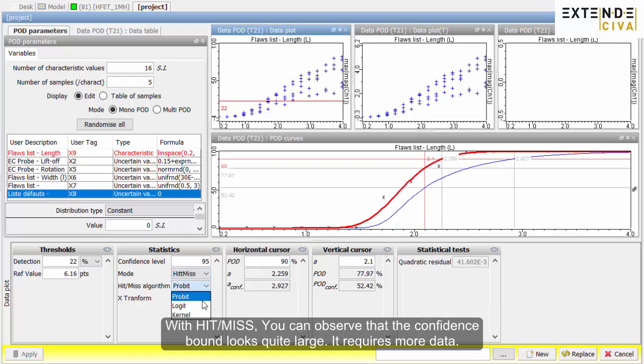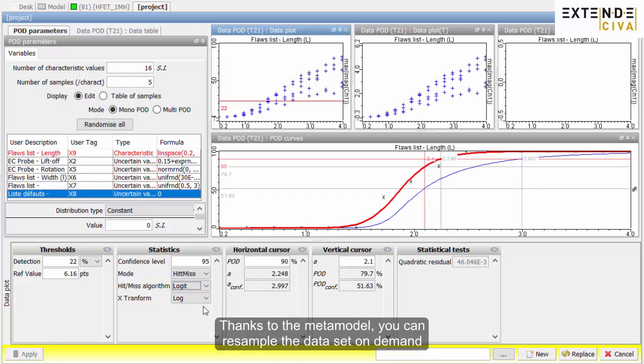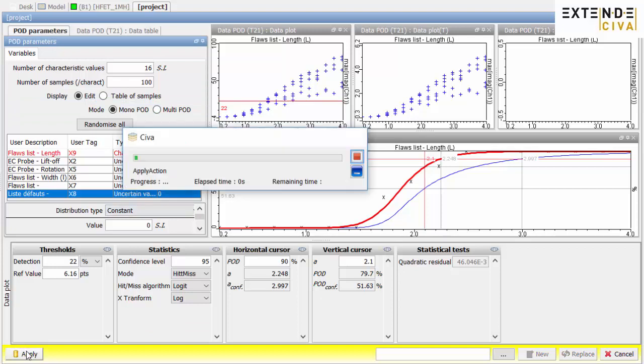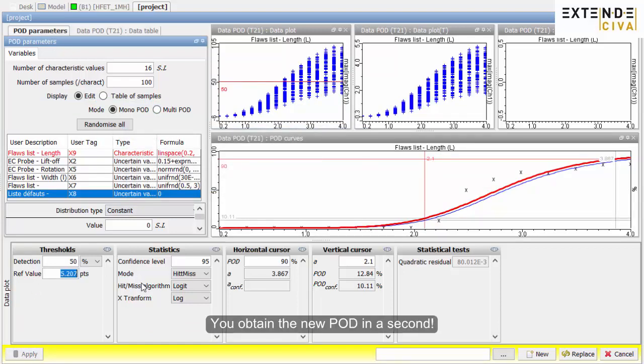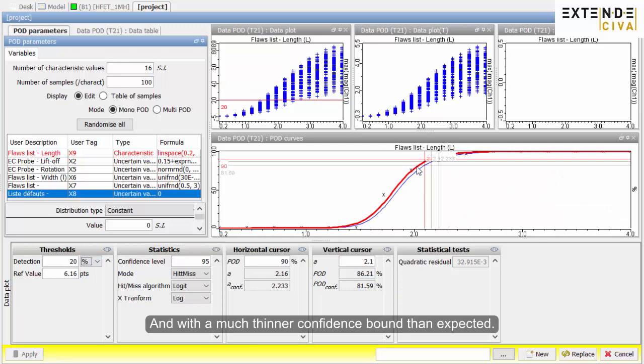With hit-miss, you can observe that the confidence bound looks quite large. It requires more data. Thanks to the metamodel, you can resample the dataset on demand and generate new POD curves without running new simulations. For instance, let's assume 100 samples for each flaw size. You obtain the new POD in a second, and with a much thinner confidence bound than expected.